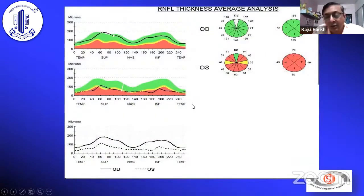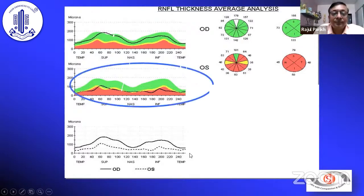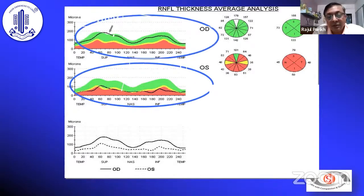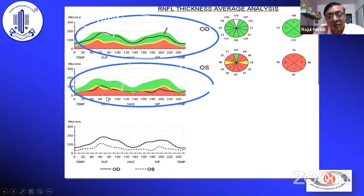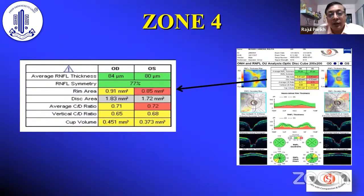This example from a time-domain machine nicely illustrates that the right eye and left eye where there is RNFL thinning can be compared. The left eye RNFL is thin in both superior and inferior, which is the area of more interest in glaucoma. The right eye has maintained the double-arm pattern, while the left eye's double-arm pattern is lost with significant RNFL thinning.